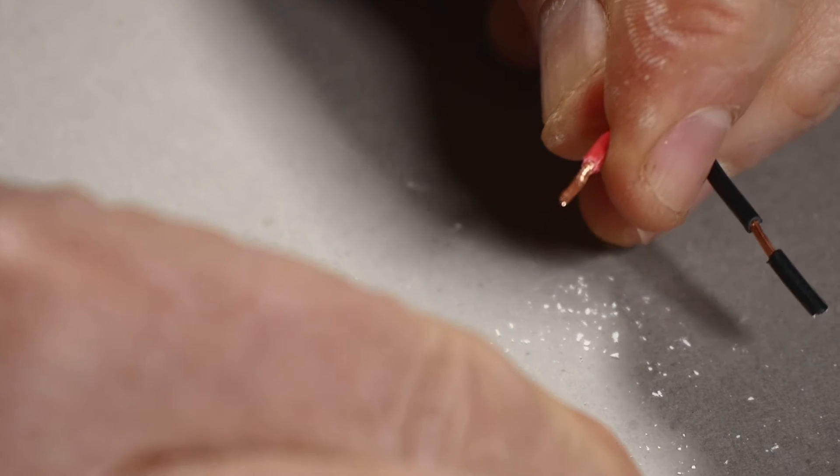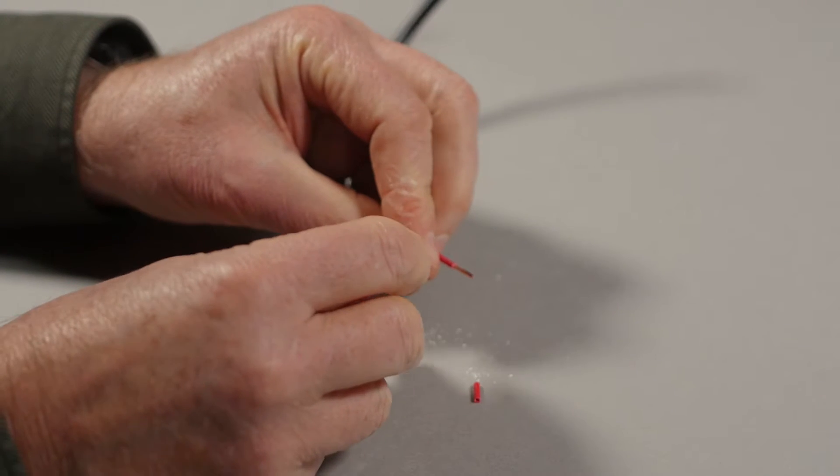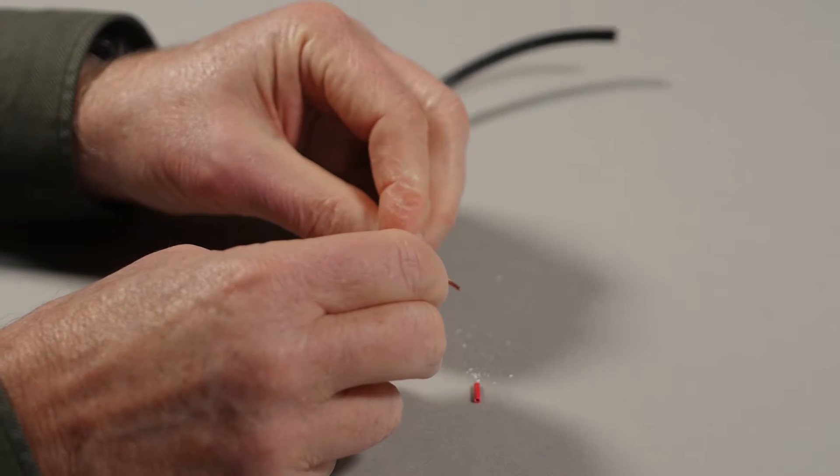Remove the short pieces of insulation with a twisting motion to create a nice, twisted group of strands.